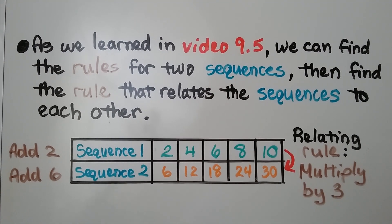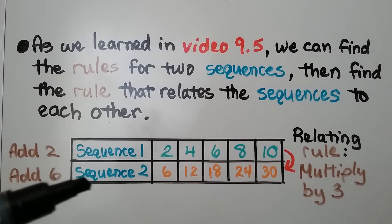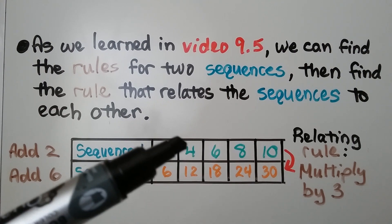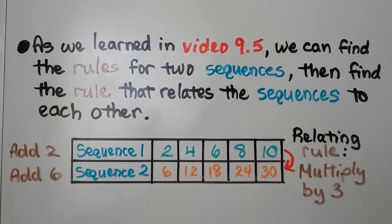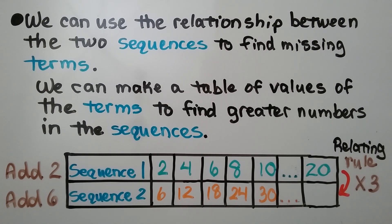We have three rules: the rule for sequence 1, the rule for sequence 2, and the rule that relates sequence 1 to sequence 2. So we can use the relationship between the two sequences to find missing terms. Terms are the numbers that are in a sequence, and we can make a table of values of the terms to find greater numbers in the sequences.